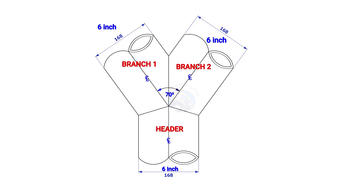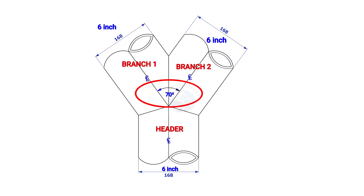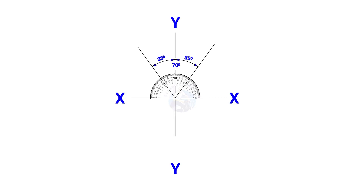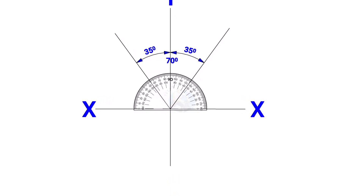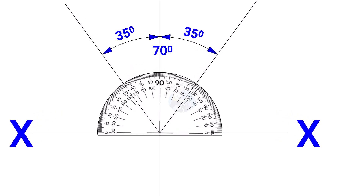The size of the Y branch in this example is 6 inches and the including angle is 70 degrees. Draw line XX and its perpendicular line YY. Since the including angle of the Y branch is 70 degrees, mark 35 degrees on both sides of the axis YY.